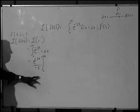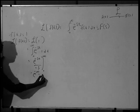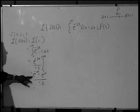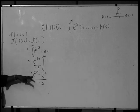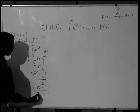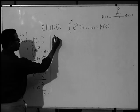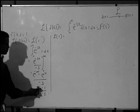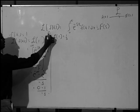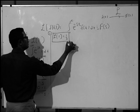Applying the limit from 0 to infinity, we get e raised to minus infinity minus e raised to 0, divided by minus s. We know that e raised to minus infinity is 0 and e raised to 0 is 1. So this is 0 minus 1 divided by minus s. Therefore, the Laplace transform of 1 is minus 1 divided by minus s, which equals 1 by s. Formula number 1: Laplace transform of 1 is 1/s.